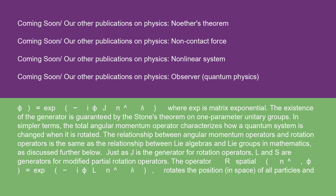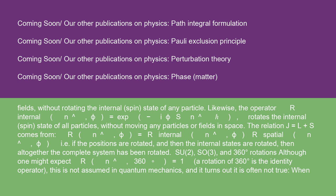Just as J is the generator for rotation operators, L and S are generators for modified partial rotation operators. The operator R_spatial(n̂, φ) = exp(−iφL(n̂)/ℏ) rotates the position and space of all particles and fields without rotating the internal spin state of any particle. Likewise, the operator R_internal(n̂, φ) = exp(−iφS(n̂)/ℏ) rotates the internal spin state of all particles without moving any particles or fields in space. The relation J = L + S comes from R(n̂, φ) = R_internal(n̂, φ) · R_spatial(n̂, φ) — i.e., rotating positions and then rotating internal states results in the complete system being rotated.